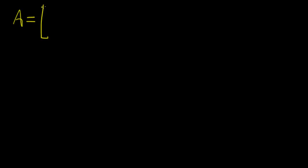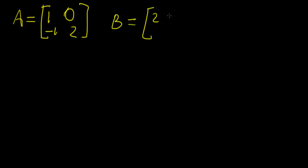So let's have the following matrices. Let's have A equal to 1, 0, minus 1, 2. That's matrix A. And let's have matrix B equal to 2, minus 1, 0, 3.